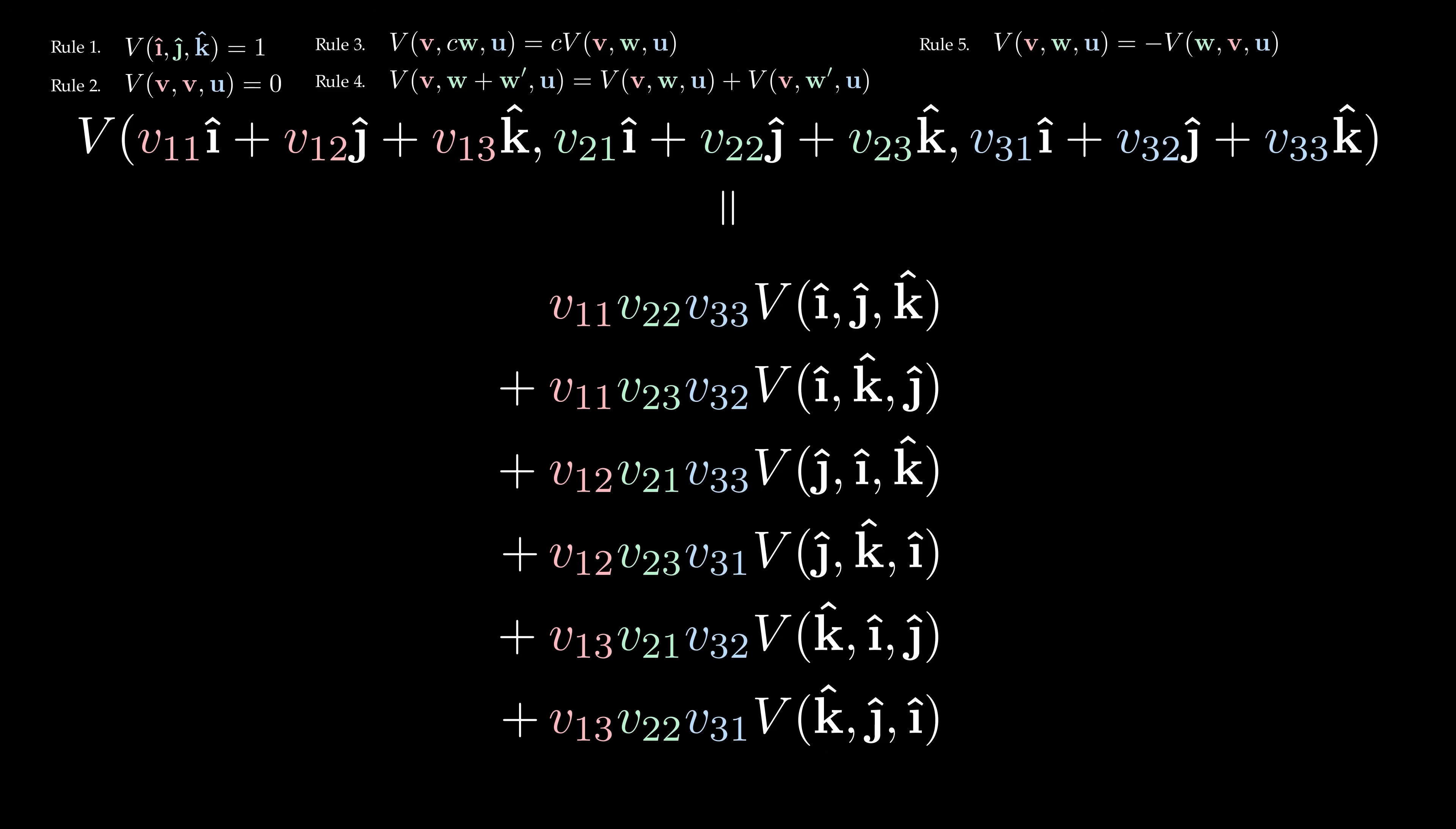The basis vectors in each term are all permutations of i hat, j hat and k hat, so we can repeatedly apply rule 5, swapping two vectors at a time, to rearrange them into the i, j, k order.